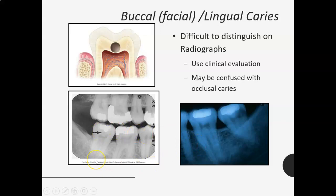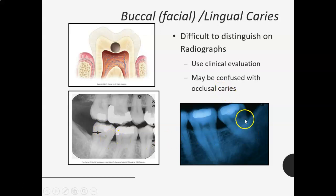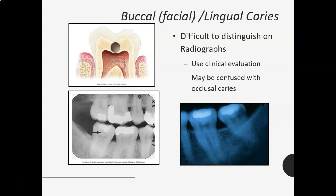Buccal and lingual caries are difficult to distinguish on a radiograph — usually you'd find these doing a clinical evaluation with an explorer. However, you can sometimes see a small radiolucent circle, which is the caries. If you can see it on a radiograph, it looks like a small radiolucent circle. You can kind of see one here as well, but you can't always see them — a lot of times these have to be diagnosed from a clinical visual examination. They may also be confused with occlusal caries.